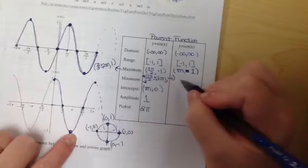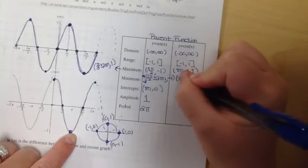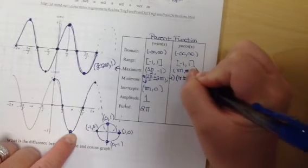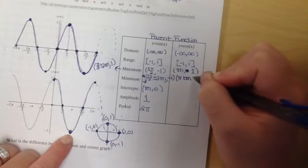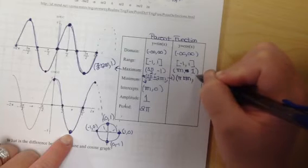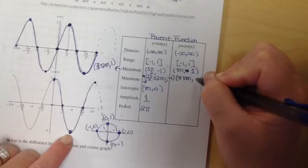My minimums right here occur at π ± πn, because I have to start at a π and then move π over to get them, comma, negative one.